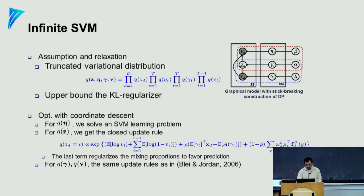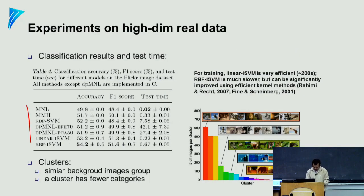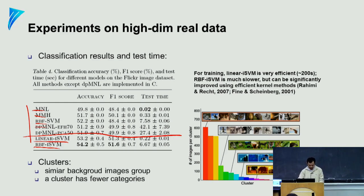This is a mixture of SVMs. We have Z pointing to Y and also X pointing to Y — Z is an indicator of which decision model to use, meaning you have many decision models and you pick one or a weighted combination. All this follows a prior, and at the end of the day you have two sets of latent variables: the weights of each decision boundary, and the latent indicator of the mixture model. Your decision rule is an infinite combination of all these SVMs. You plug the algebraic form into the equation and run the optimization. You can approximate the Dirichlet process with a truncated stick-breaking, which makes the problem easier to manage.